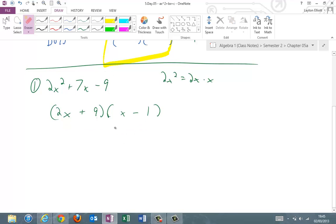Finally, we're going to check by FOILing. The check is to go first 2x². Outer is negative 2x. Inner is positive 9x, so plus 7x. Last is negative 9. And that checks. So I'm just going to erase this because our factored form is this.